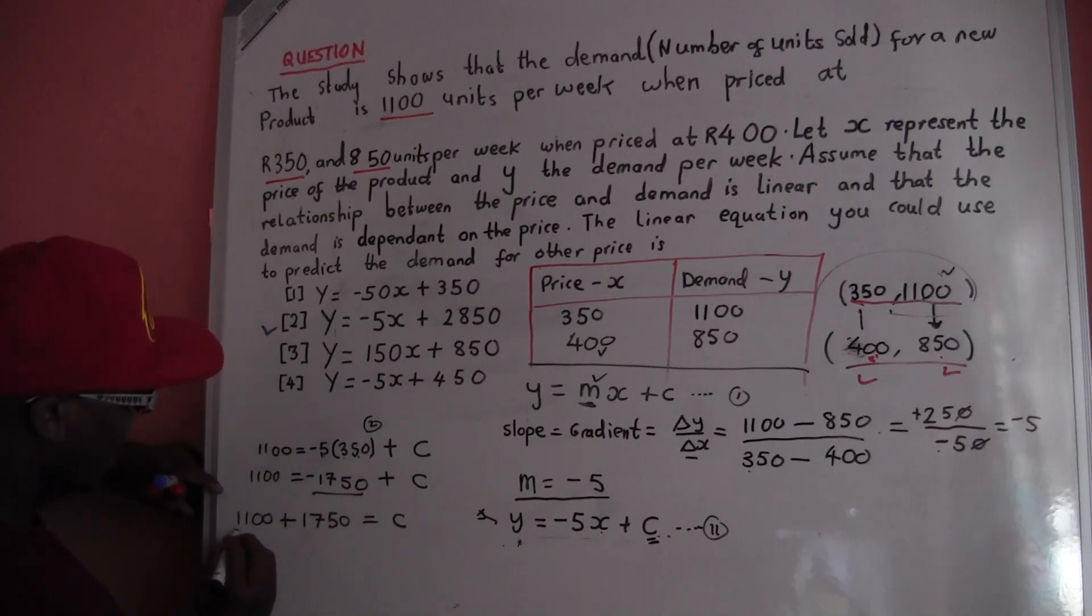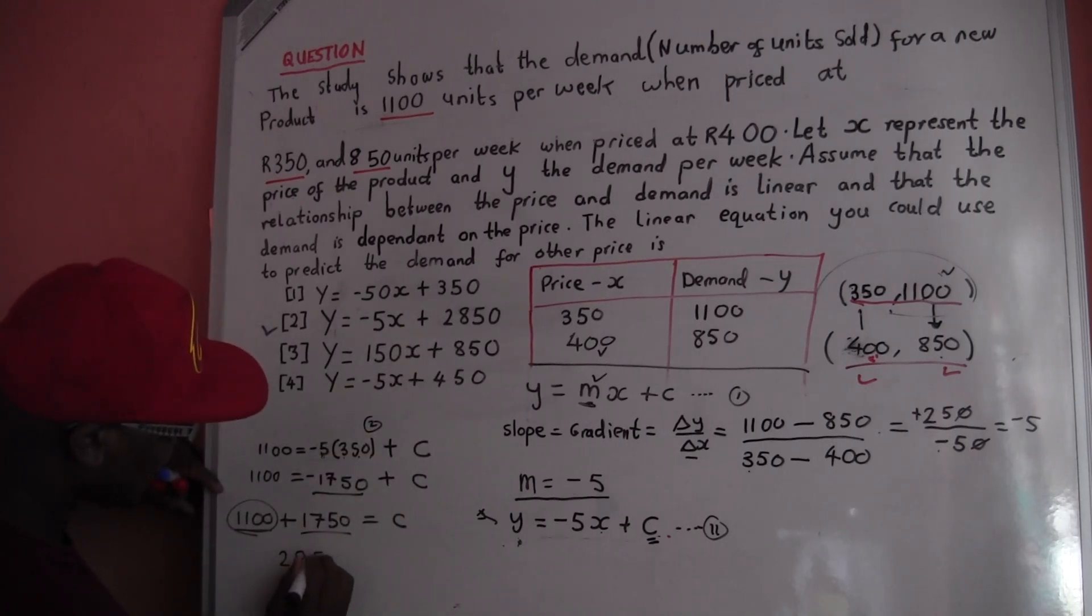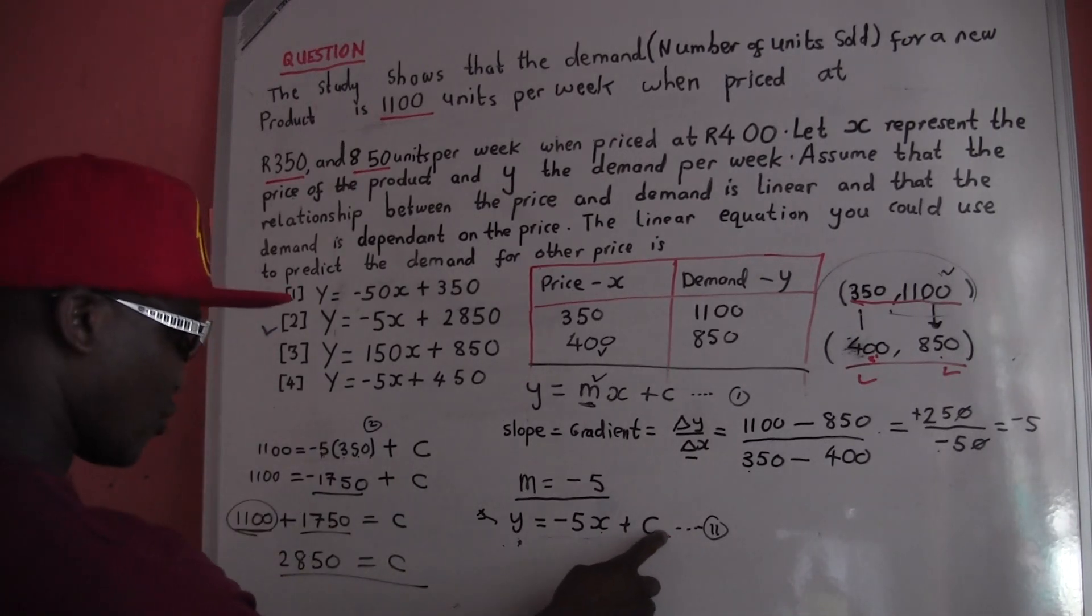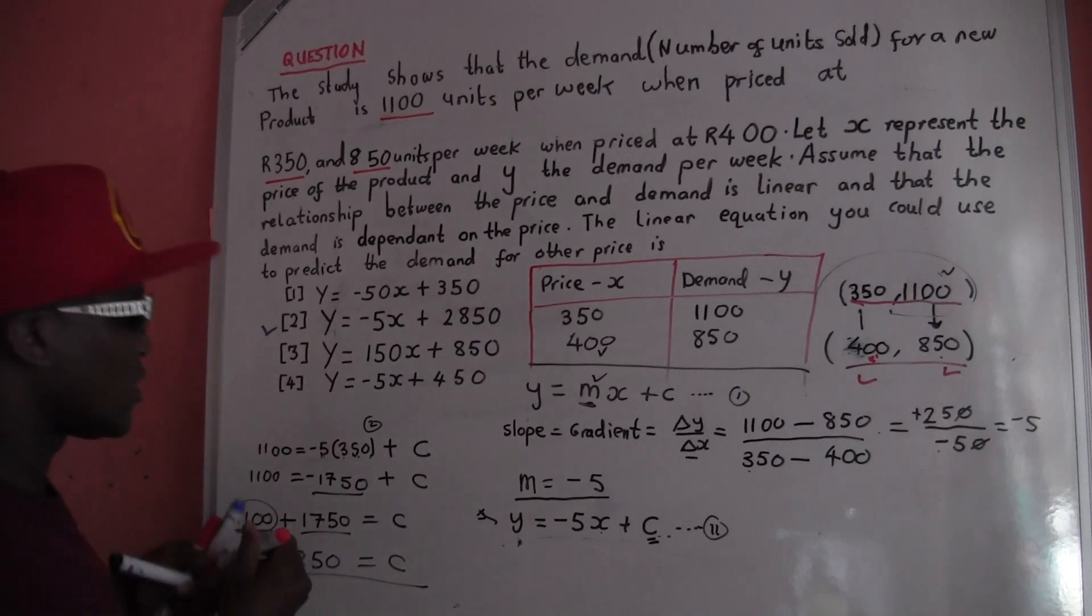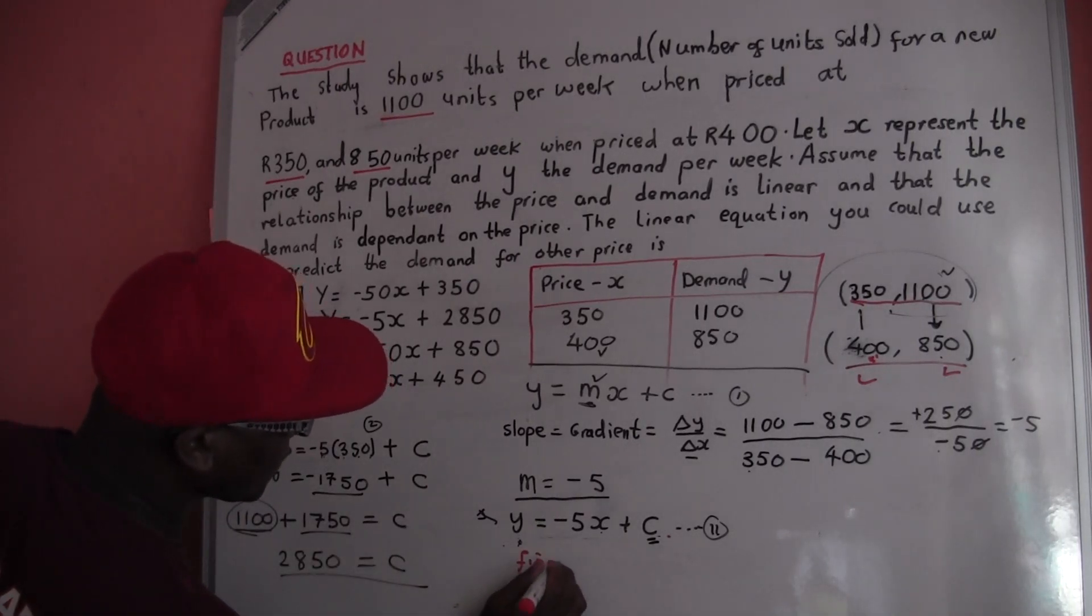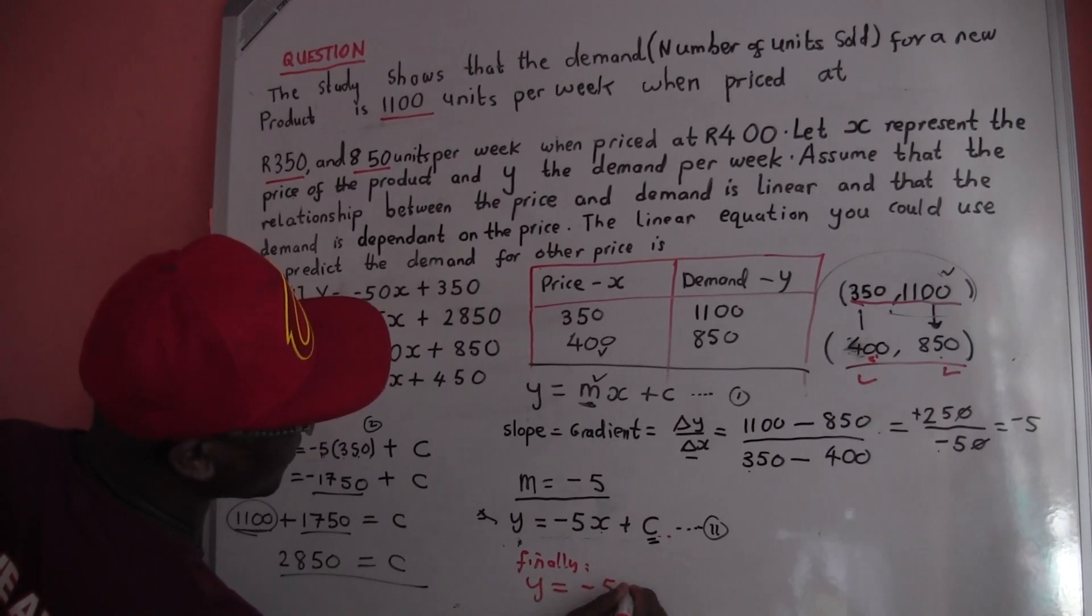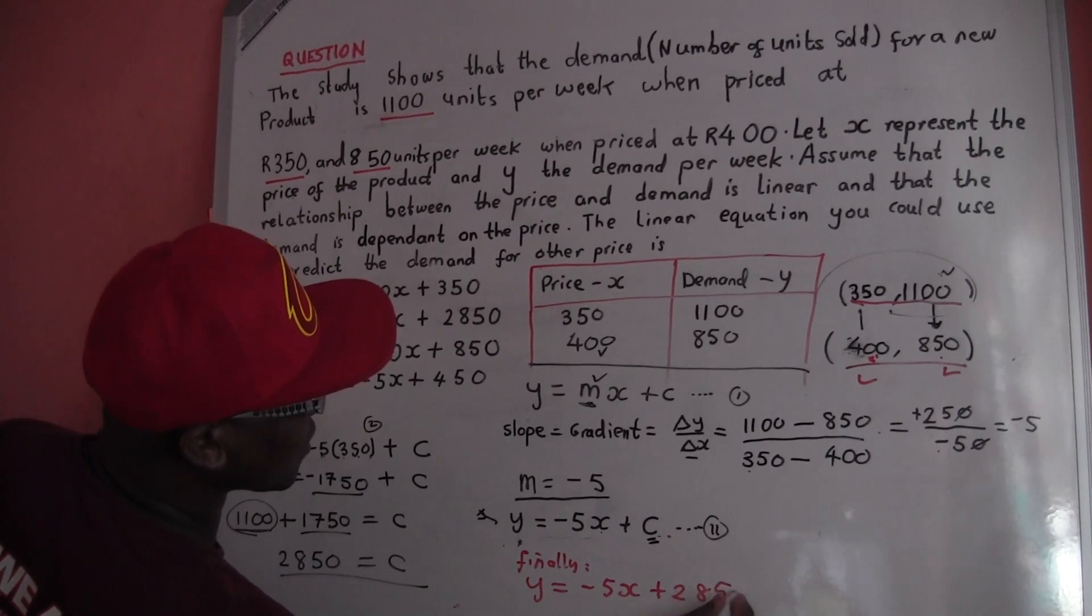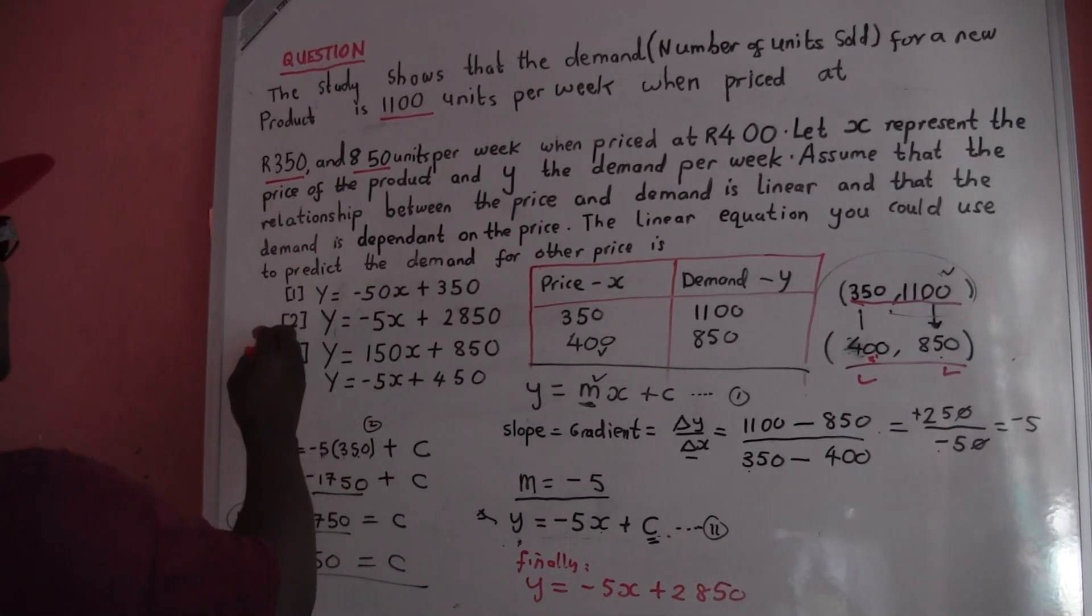So when you add this, look, 1100 plus 1750, when you add them it's going to give you 2850 equals C. So after I get my C, what I'm going to do, I'll substitute right here because I have my C already. So finally, Y equals negative 5X, my C equals 2850. So our option is option 2. Look here man, so you've seen it time by time.